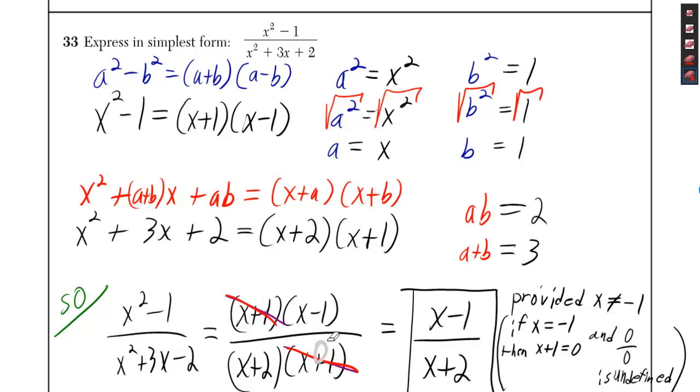So, technically you would want to write as long as x is not equal to negative 1, but you'll probably get full credit for writing x minus 1 over x plus 2.